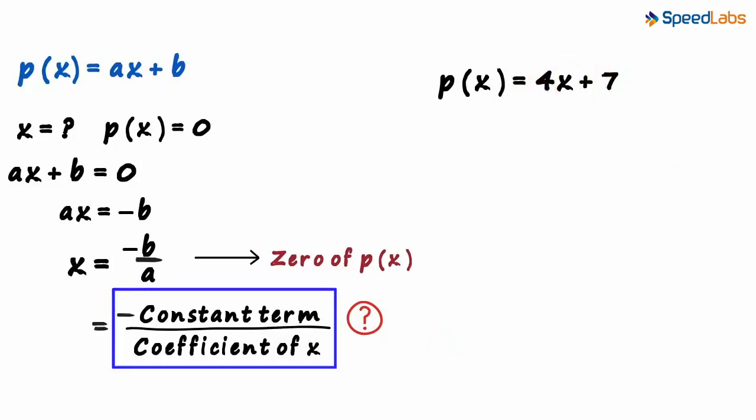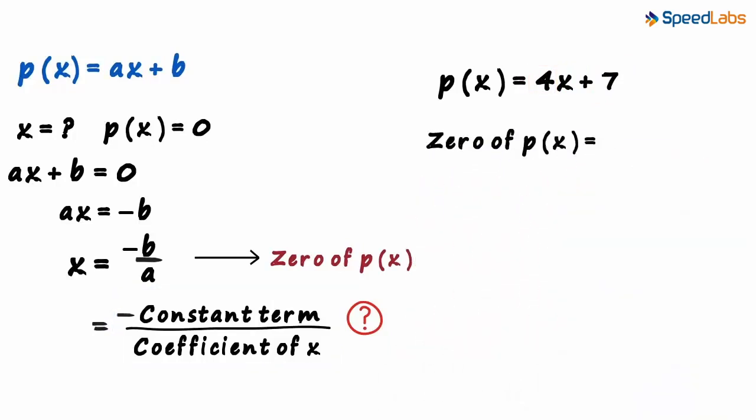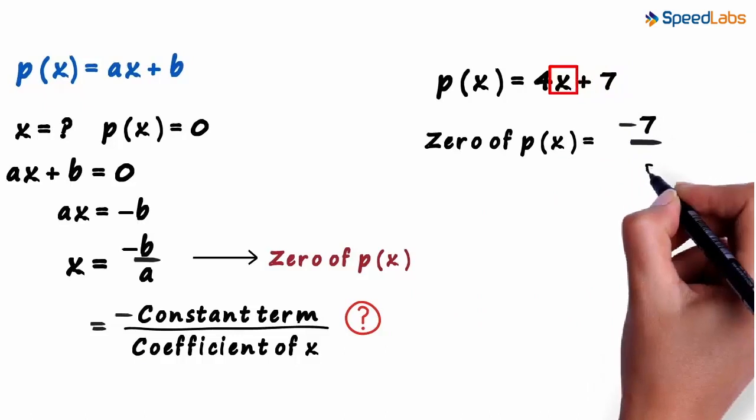The constant term is 7 and the coefficient of X is 4. Using this formula, the zero of P of X can be written as the negative of the constant term, that is minus 7, divided by the coefficient of X, which is 4.